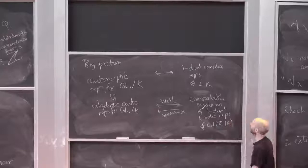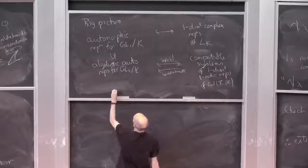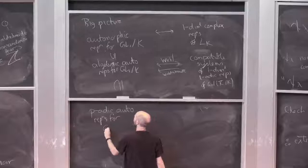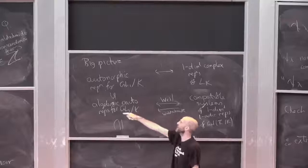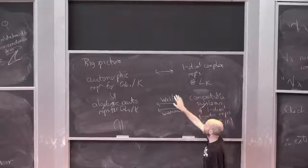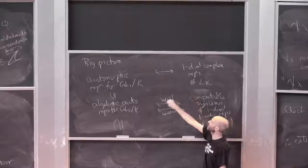By Weil's construction plus some transcendence theory (Waldschmidt going the other way), algebraic automorphic representations for GL1 over k biject with compatible systems of one-dimensional L-adic representations of Gal(k-bar/k). And then down here we have p-adic automorphic representations, which include these algebraic ones as a subset.